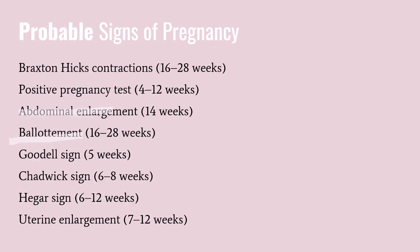Probable signs of pregnancy are those detected on physical examination by a healthcare provider. Ballotment is when the examiner pushes against the woman's cervix during a pelvic examination and feels a rebound from the floating fetus, around 16 to 28 weeks. The Goodell sign is softening of the cervix, around 5 weeks. The Hegar sign is softening of the lower uterine segment or isthmus, around 6 to 12 weeks. The Chadwick sign is a bluish-purple coloration of the vaginal mucosa and cervix, occurring during weeks 6 through 8.